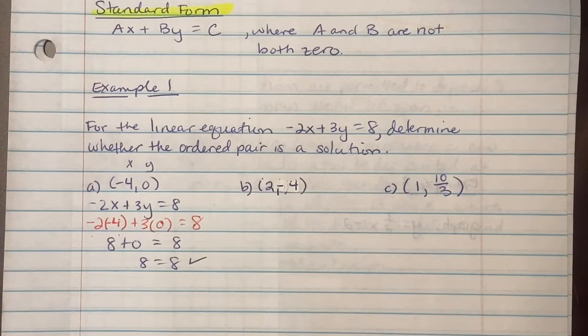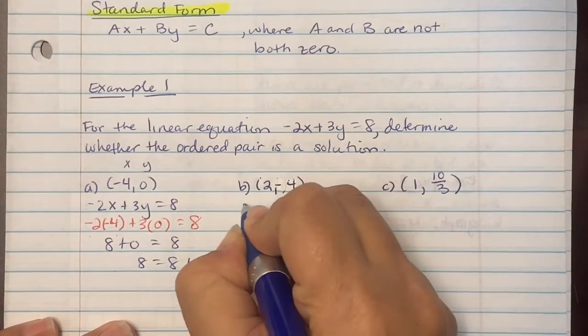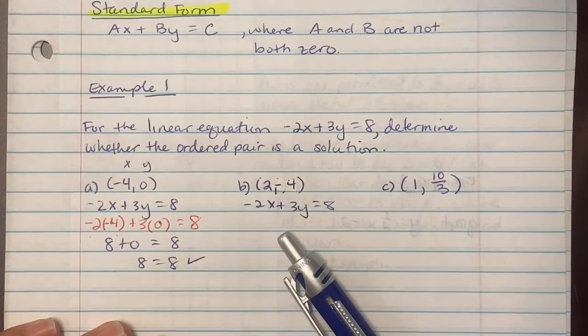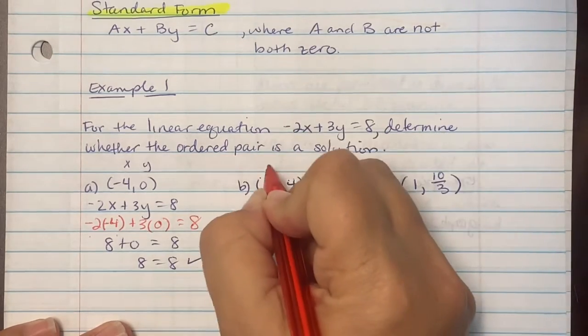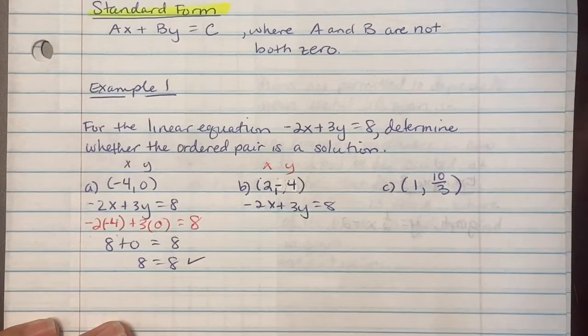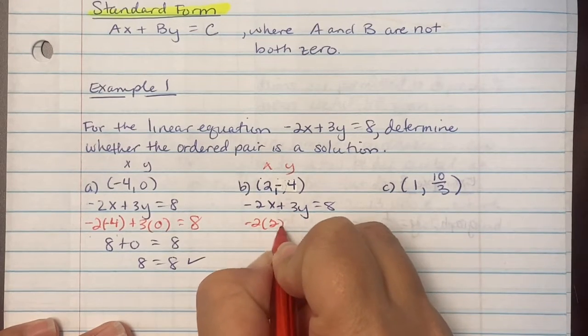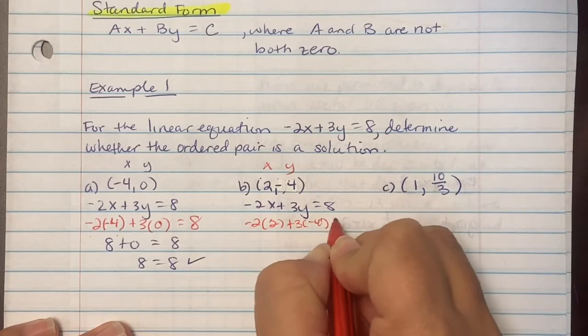So on b it says (2, -4) is our ordered pair, so you're going to substitute into -2x + 3y = 8. Start out with setting up your equation. And you're going to replace x and y with 2 and -4. So again, mark your x's and y's in your new substitution. So -2 times, it's -2 times your positive 2 plus 3 times your -4 equaling 8.